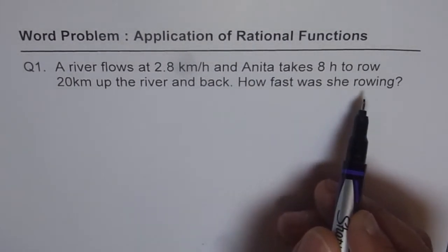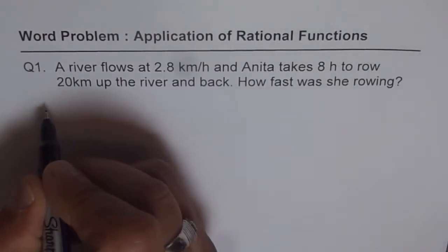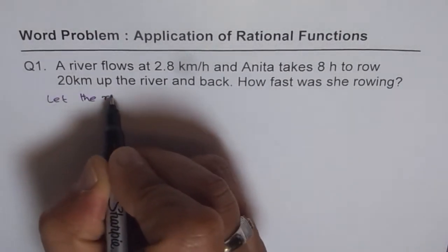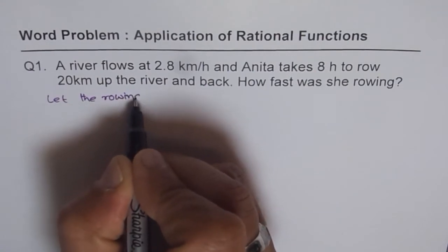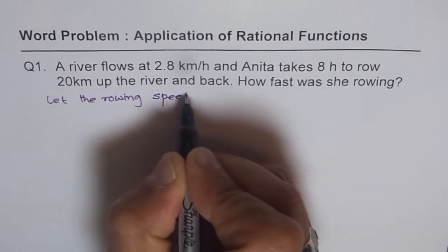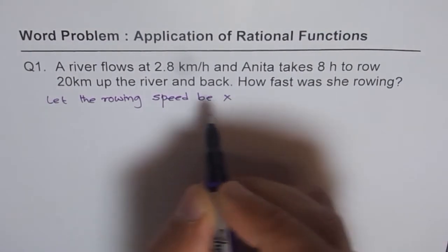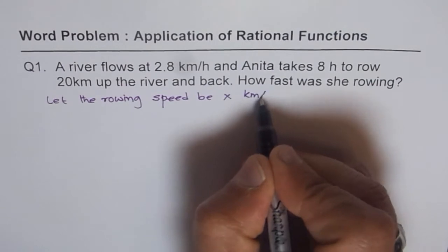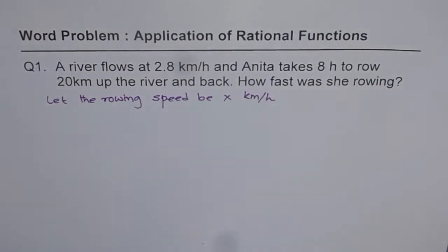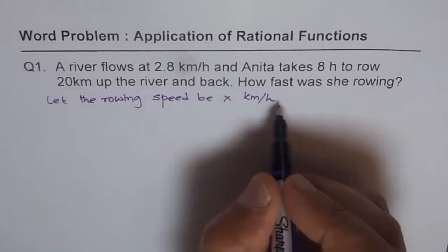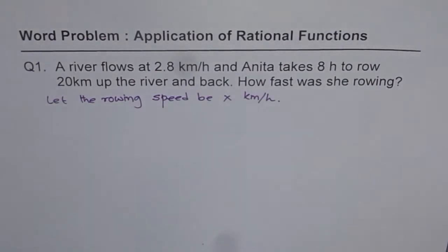How fast was she rowing? So let the rowing speed be x kilometers per hour. It is better to put units along with the variable. Whenever you solve a question, try to define all the variables with the help of a let statement.